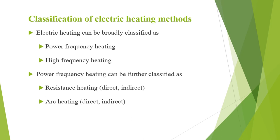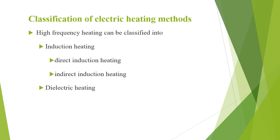Classification of electric heating methods: electric heating is broadly classified into power frequency heating and high frequency heating. In power frequency heating we have resistance heating and arc heating. In resistance heating there are two types: direct and indirect. Similarly in arc heating there are two types: direct and indirect. In high frequency heating there are two types: induction heating and dielectric heating. In induction heating we have direct and indirect induction heating.